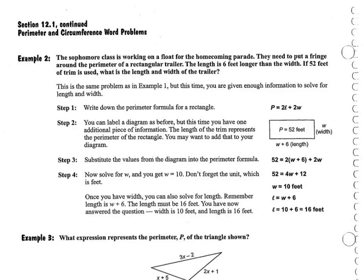On the next page we have a second example. In this case they need to put a fringe around the perimeter again. But even though the length is 6 feet longer than the width, I tell you that it is 52 feet. So here it says if 52 feet of trim is used, what is the length and width of the trailer? So I am actually asking for the actual length and the actual width given the total perimeter is 52. So we go with the same thing that we had the last page, but in this case I give you the number 52.